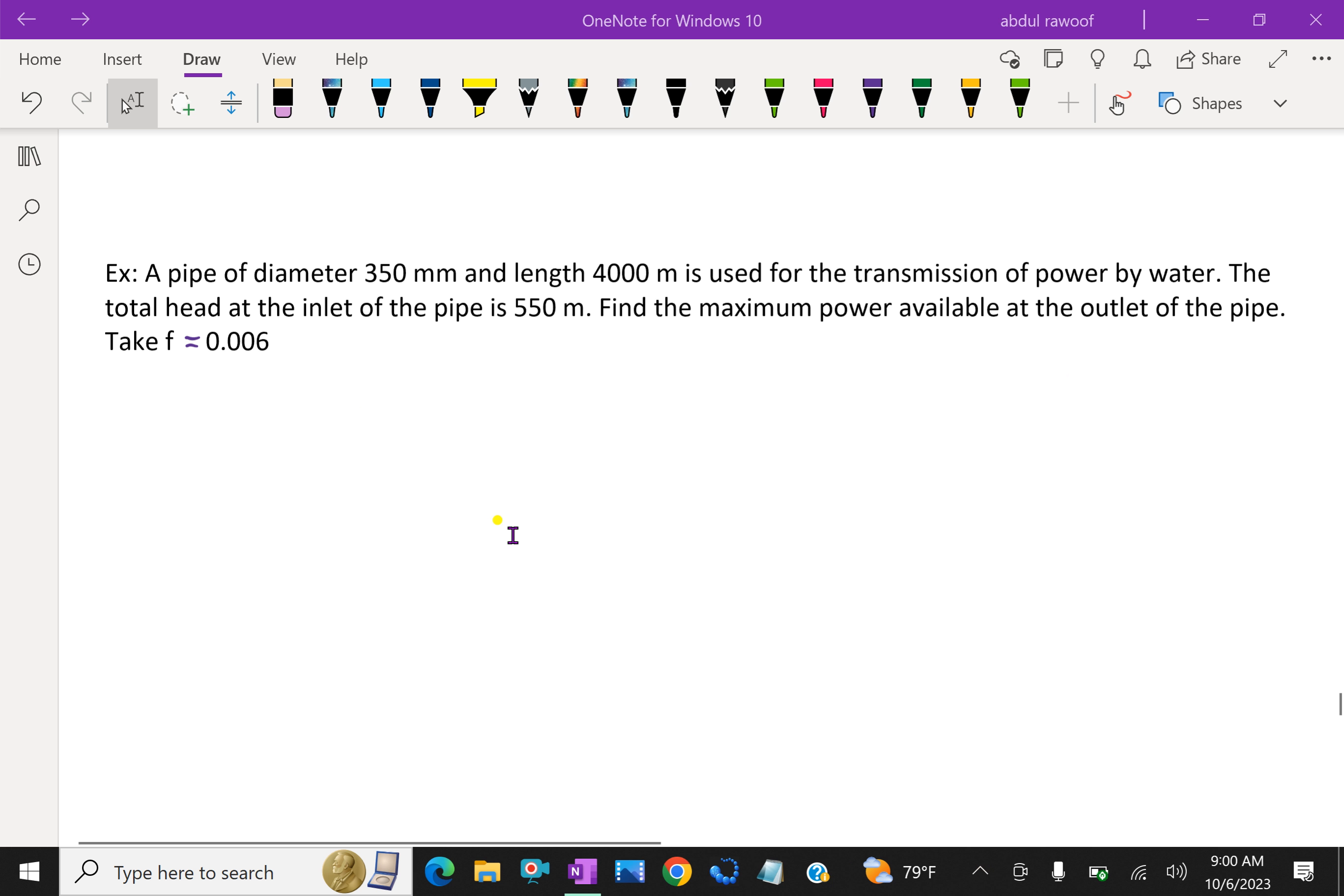Here, the given things: diameter of the pipe d equal 0.35 meter, length of the pipe L is 4000 meter, total head H equal 550 meter, and f is 0.006.